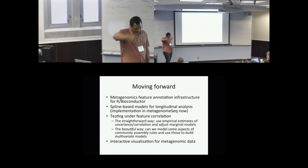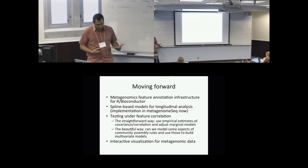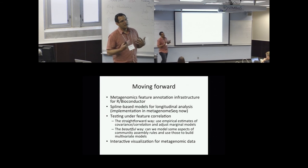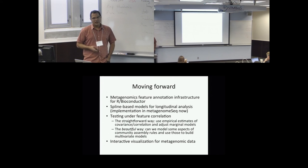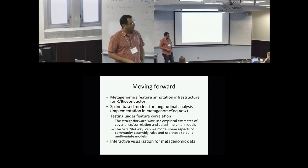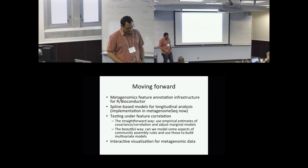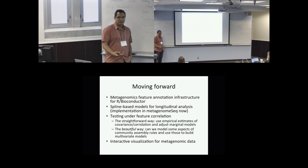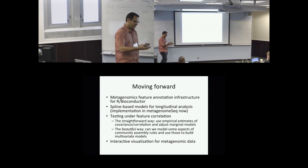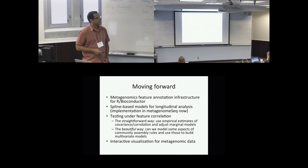So moving forward, what are we working on? I think an important part of what we have in our software, besides our statistical models, is an infrastructure for dealing with metagenomic data. And part of what we want to do is stabilize a feature annotation infrastructure for that. We're also working on spline-based models for longitudinal analysis. That implementation is also in MetagenomeSeq, so you can try it out. And of course, the big elephant in the room is that all of these features are correlated. For example, compositionality is one way of inducing correlation between features. But now we think we're not exactly sure that that's applicable.